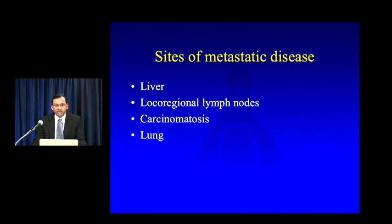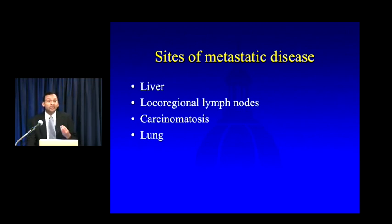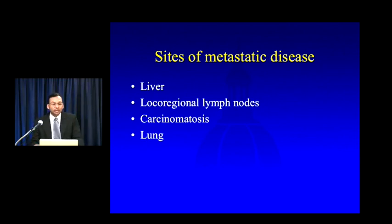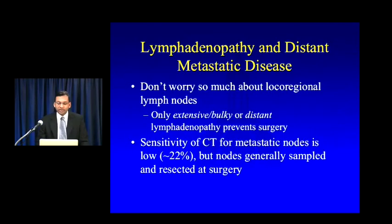The first step in determining resectability is to identify the presence or absence of metastatic disease. By far the most common location for pancreatic cancer metastasis is the liver — look very carefully for subtle metastases. Local regional nodes are commonly involved, but big, bulky, obviously metastatic nodes are not that common. Carcinomatosis is very common but we tend to miss it quite a bit. Lung is probably the fourth most common site.